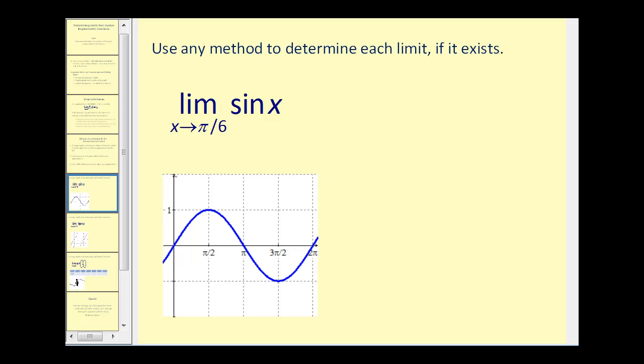The limit as x approaches π/6 of sin(x). Here's the graph of y equals sin(x). Let's identify where x equals π/6, this vertical line here. We want to see if we're approaching the same function value from the right and from the left. Since the sine function is nice and smooth and continuous around π/6, we can perform direct substitution to find the value of this limit.